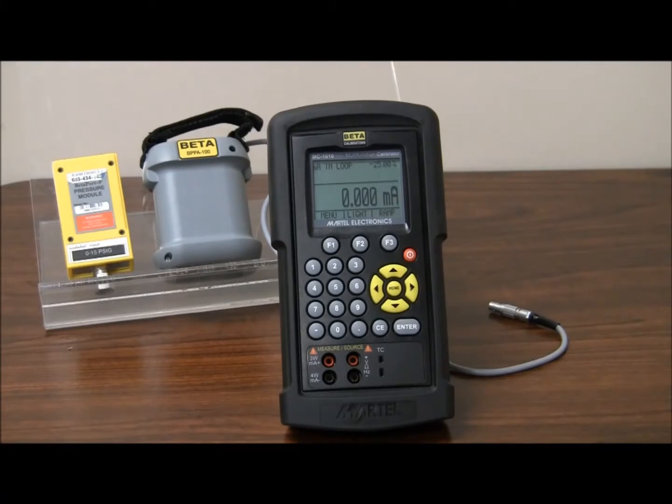It runs on four AA batteries and lets you measure current in and out up to 24 milliamps, voltage in and out up to 20 volts, and powers up the loops for 24 volt DC.